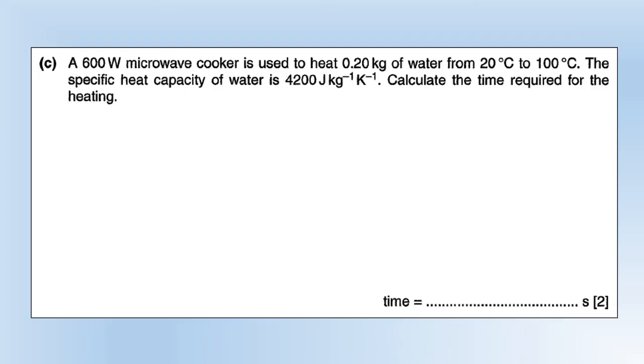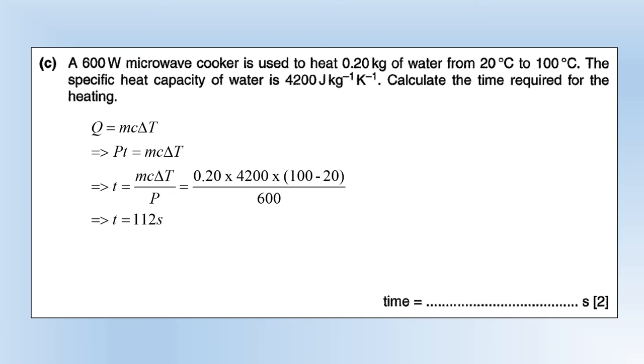A 600 watt microwave cooker is used to heat 0.20 kilograms of water from 20 degrees to 100 degrees. The specific heat capacity is 4200. Calculate the time for heating. The general equation we're going to use is Q equals mc delta T, but we've got power and time so we can substitute that in for Q, rearrange to make t the subject, plug the values in, and you end up with 112 seconds.